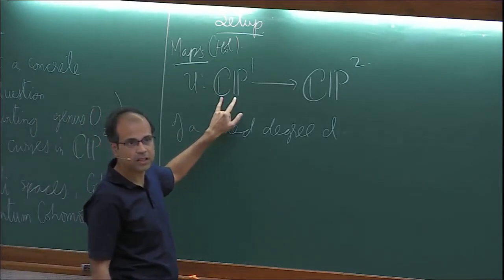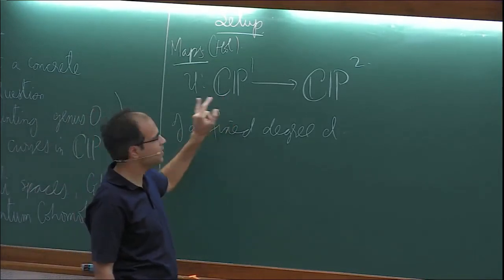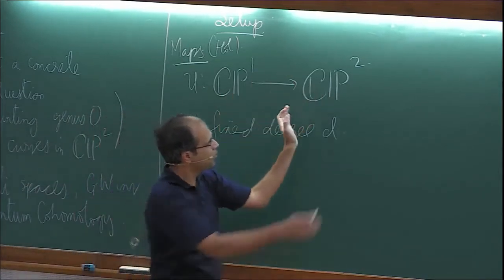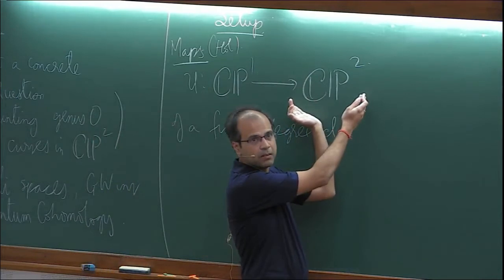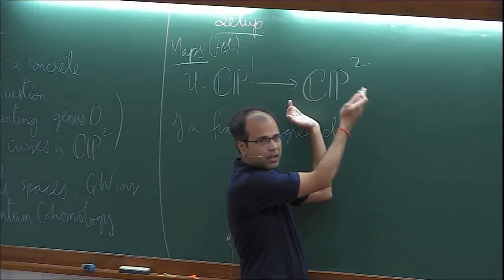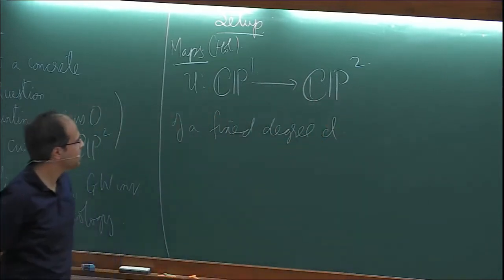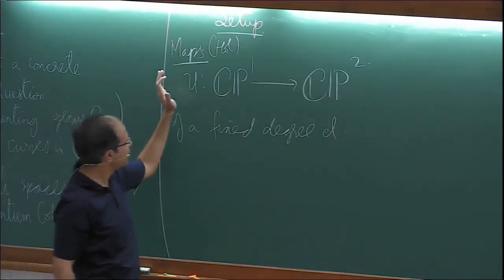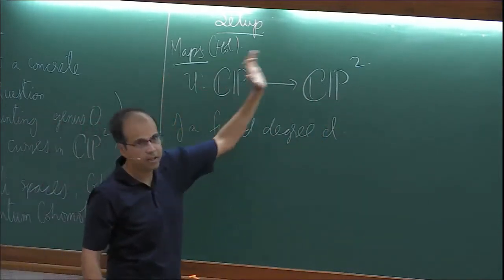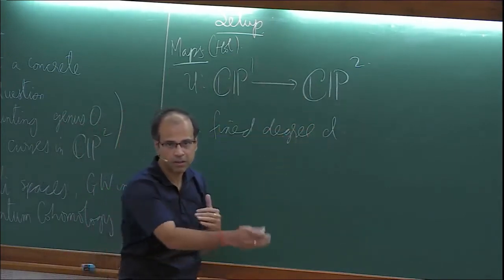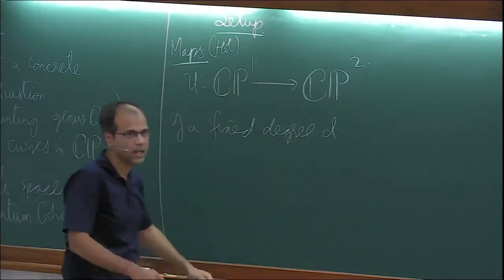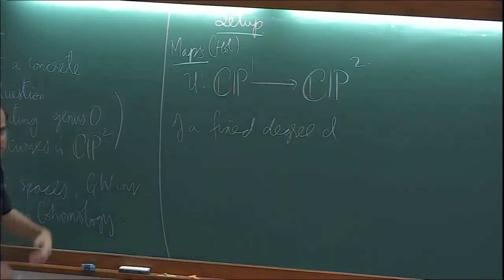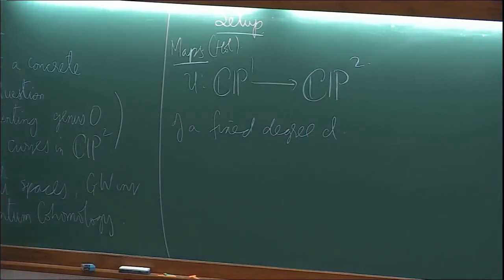More generally, I could have taken a genus G Riemann surface, looked at holomorphic curves, and more generally I could have had a symplectic manifold with a compatible almost complex structure and looked at J-holomorphic maps representing a particular homology class. That is the more general discussion, which I am preserving for tomorrow.